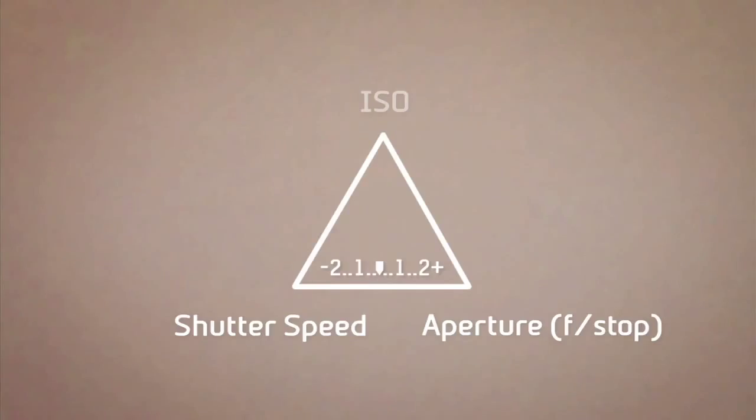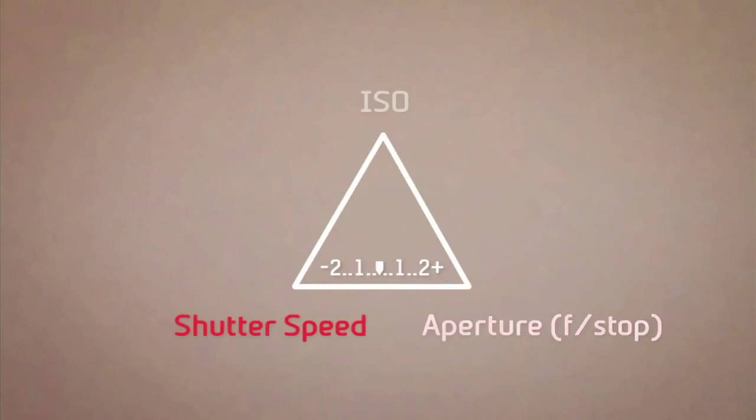When you get ready to take a photograph, a built-in light measuring device called a light meter decides how much light is needed to give you the correct exposure, based on the ISO or sensitivity that you've chosen. By correct exposure, we mean the right amount of light reaching a sensor to allow you to faithfully recreate the scene in the photograph. The light meter suggests a combination of two points of the exposure triangle: a shutter speed and an f-stop.